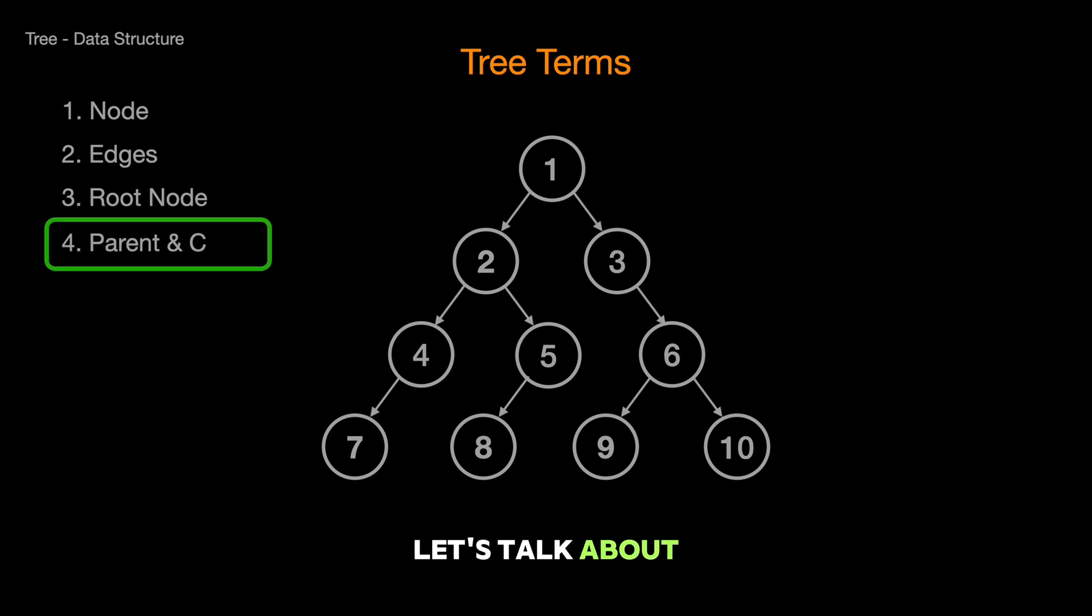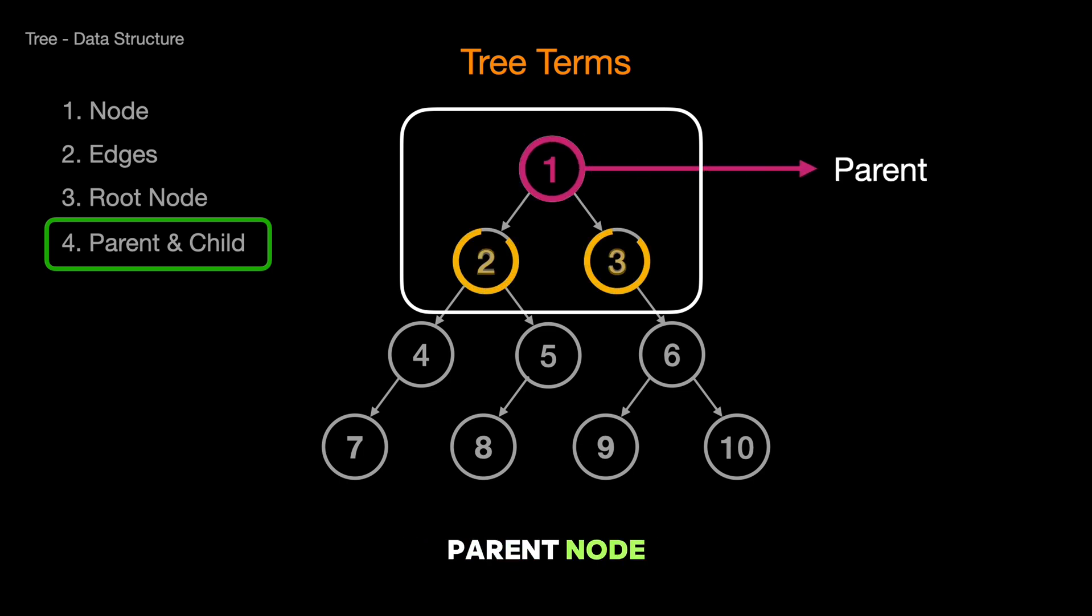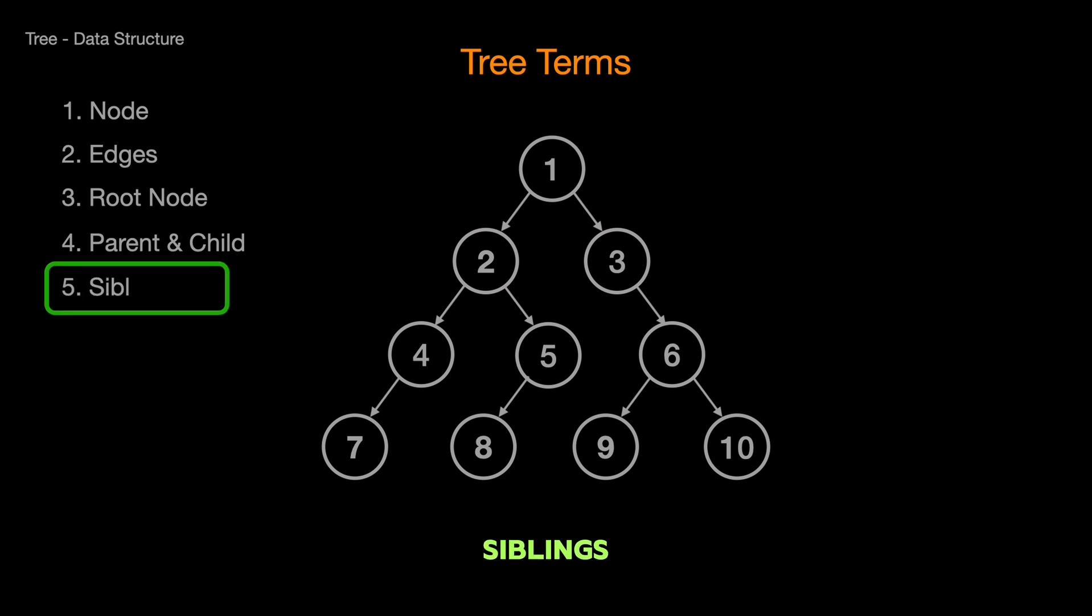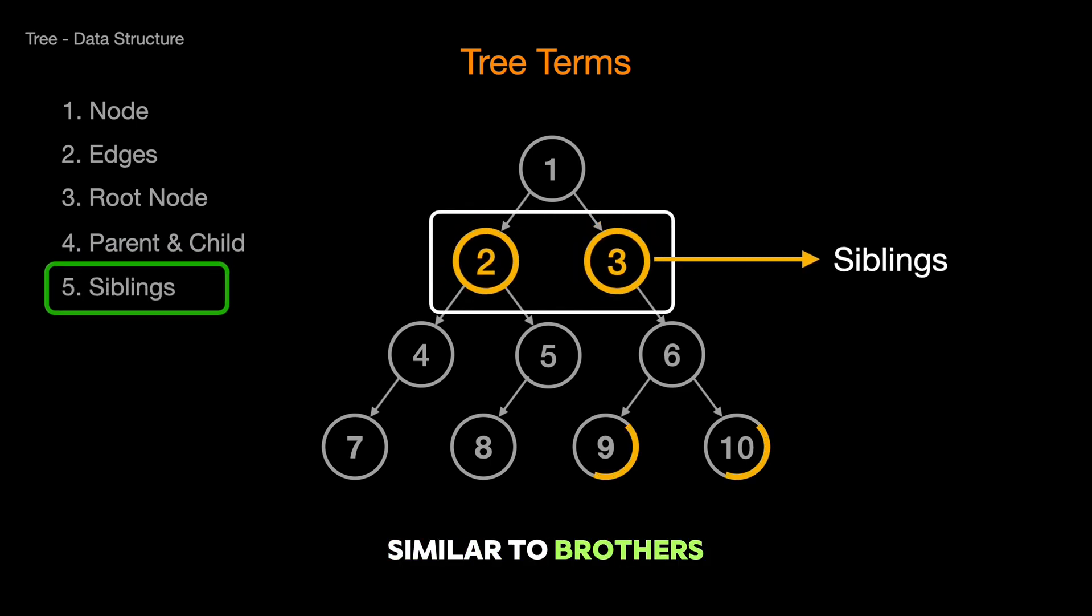Speaking of family, let's talk about parent and child nodes. Here's where the family analogy comes in. Any node that has other nodes branching from it is called a parent node. The nodes that come from it are its child nodes. Just like in a family, a child node can become a parent node too if it has nodes extending from it. And let's not forget about siblings. Nodes that share the same parent node are called siblings, similar to brothers and sisters. They're on the same level in our tree.